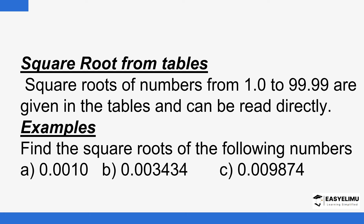When you pick up a four-figure mathematical table, it has a series of tables. One of them is the table of square roots, where you can read square roots of numbers ranging from 1 to 99.99. This lesson focuses on numbers below that range — from zero to one — such as 0.001, 0.003434, and 0.009874.